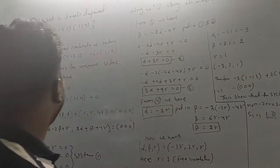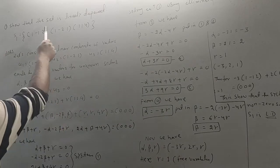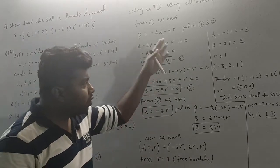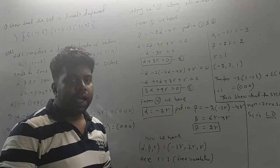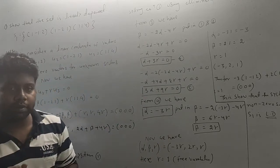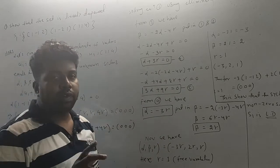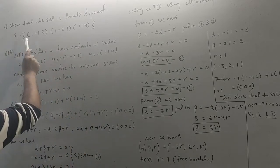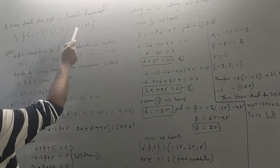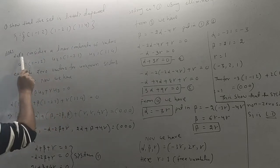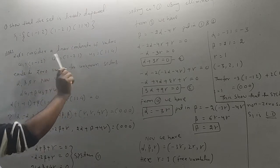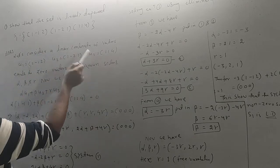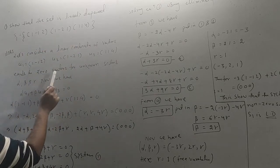The next step: we will show that a given set is linearly dependent. Consider the set S1 containing vectors: (1, 2, 1), (-1, 1, 1), and (1, 4, ...). Let us consider a linear combination of these vectors U1, U2, U3 equal to the zero vector.